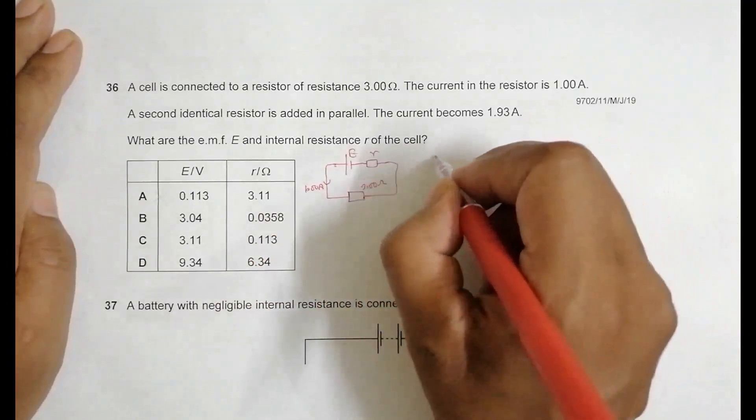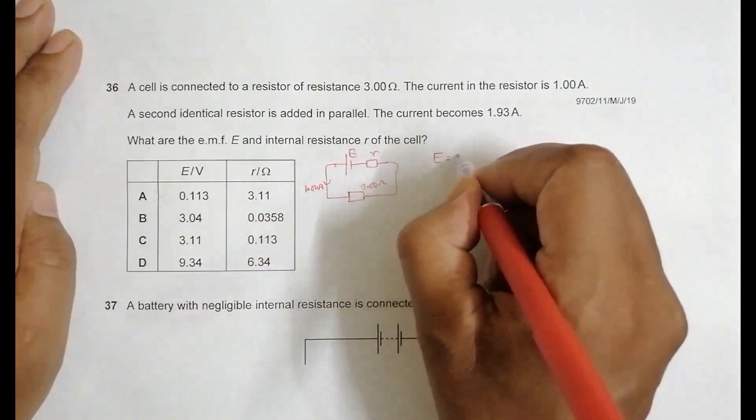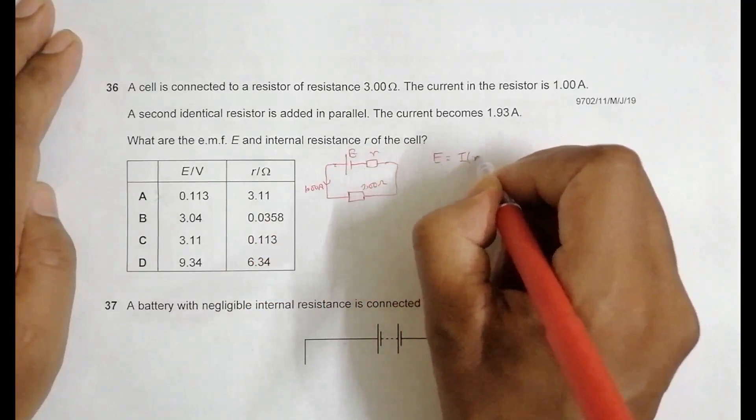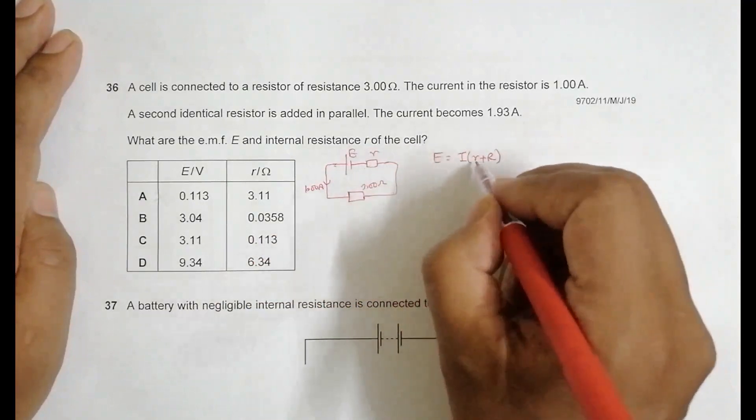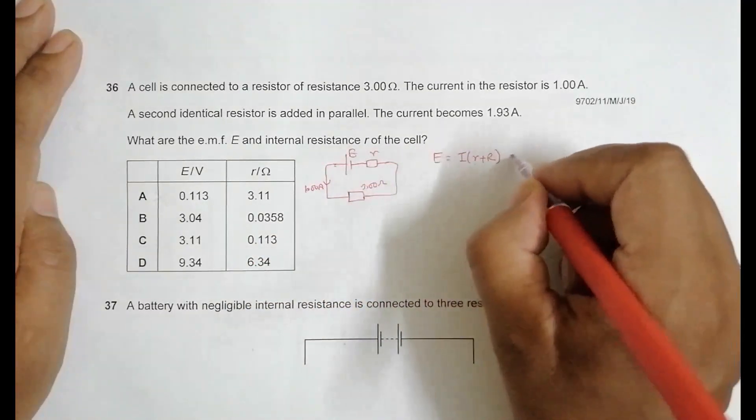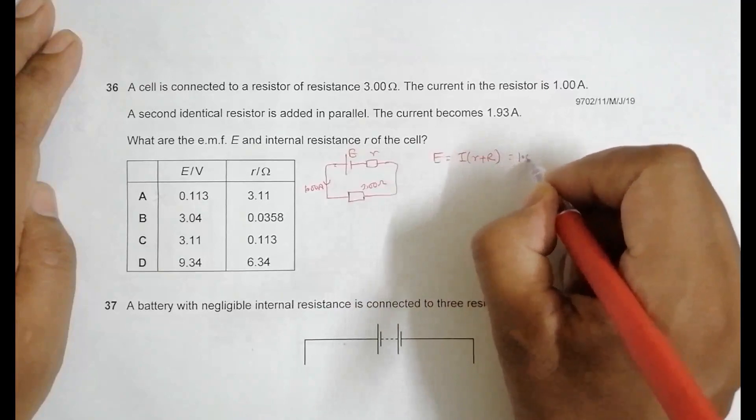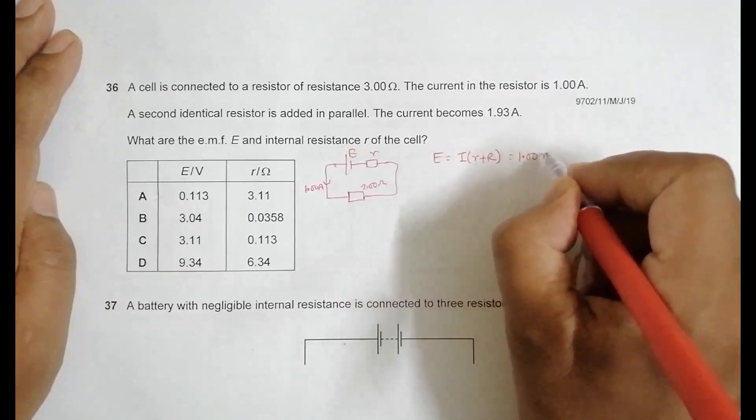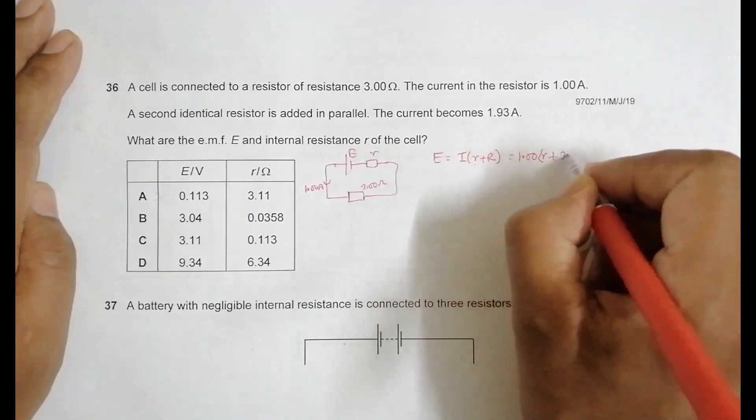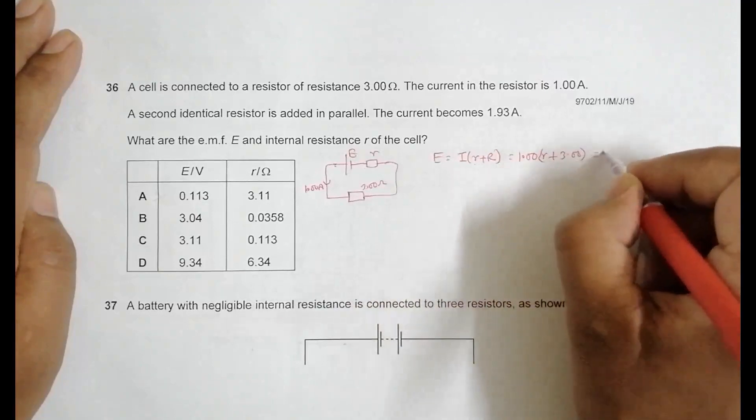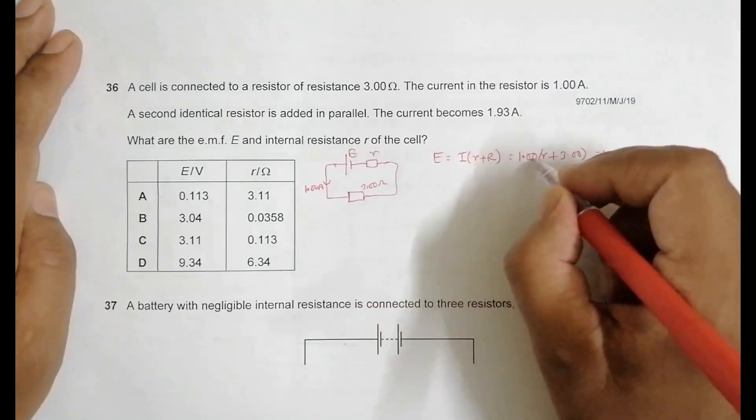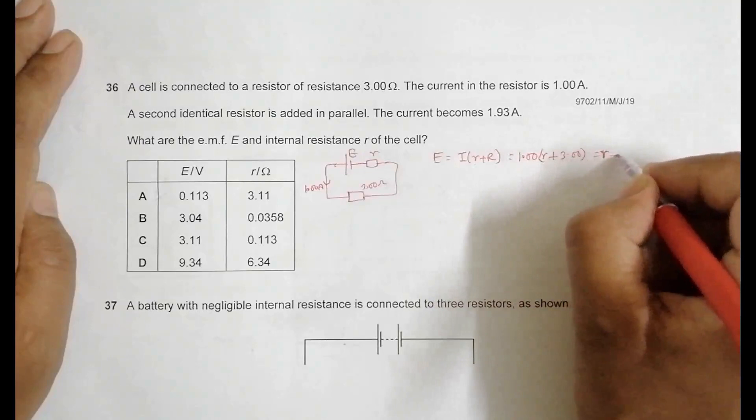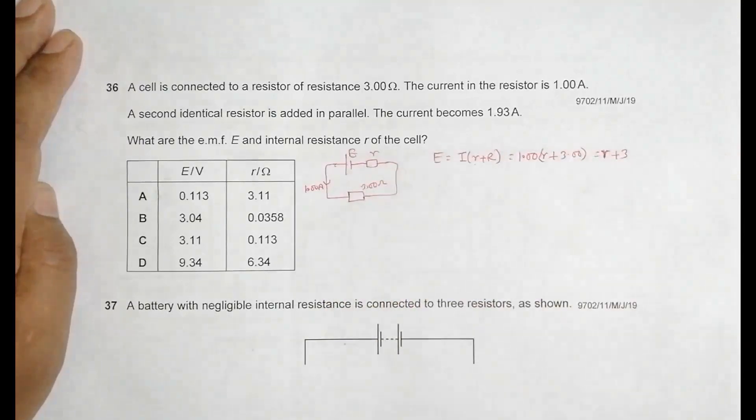In this case, E should be equal to current into total resistance here in the circuit. This is the internal and this is the external, so that's equal to 1.00 into r plus 3.00. So E equals r plus 3.